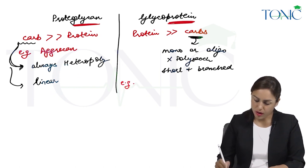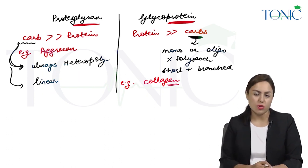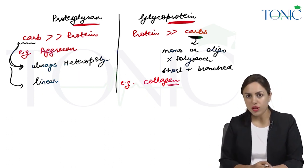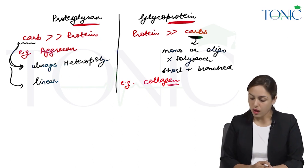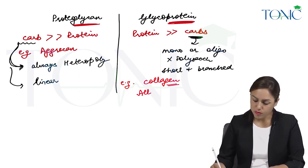Then example of glycoprotein. Example is the fibrous protein collagen, that is a glycoprotein, means mainly it is a protein but some carbohydrate is attached to it, and also all the plasma proteins are glycoproteins.